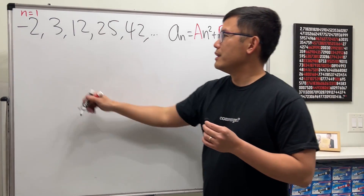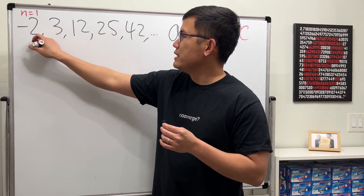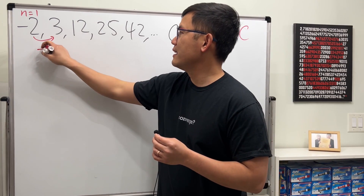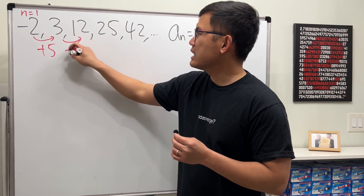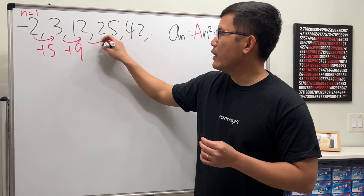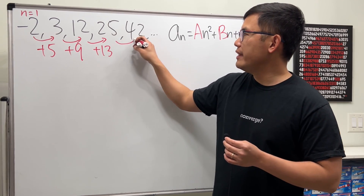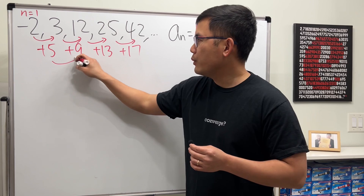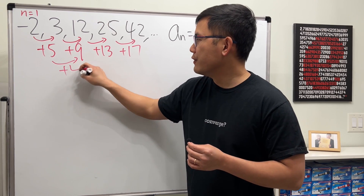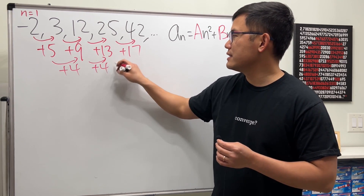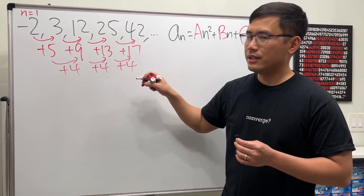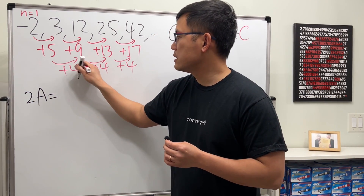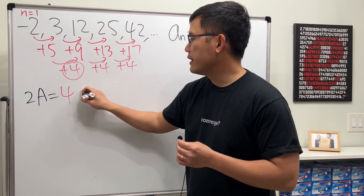Now another example. First, going from negative two to three we add five, then we add nine, then thirteen, then seventeen. Each time we add four — that's the second difference. So 2a equals four.